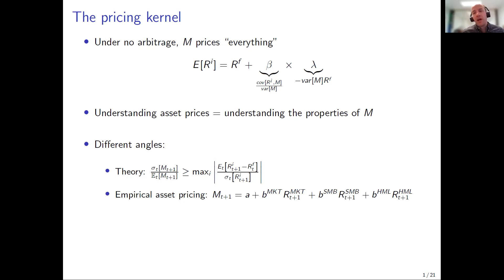That tells us something about the properties of M but doesn't really make M observable. Another angle many people take is to write down linear factor models for returns. These models imply that the pricing kernel itself is linear in the factors. What we've probably learned is that there's more than one factor affecting the pricing kernel — a lot of work goes into finding out what those factors are and how many there are.